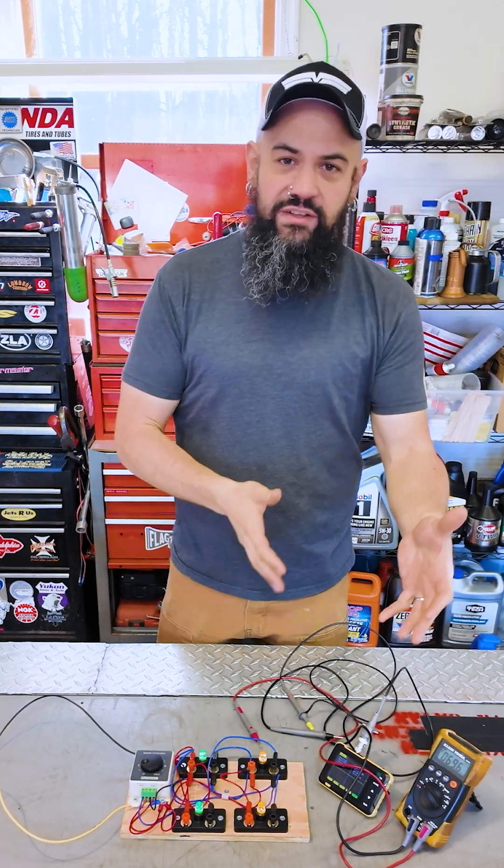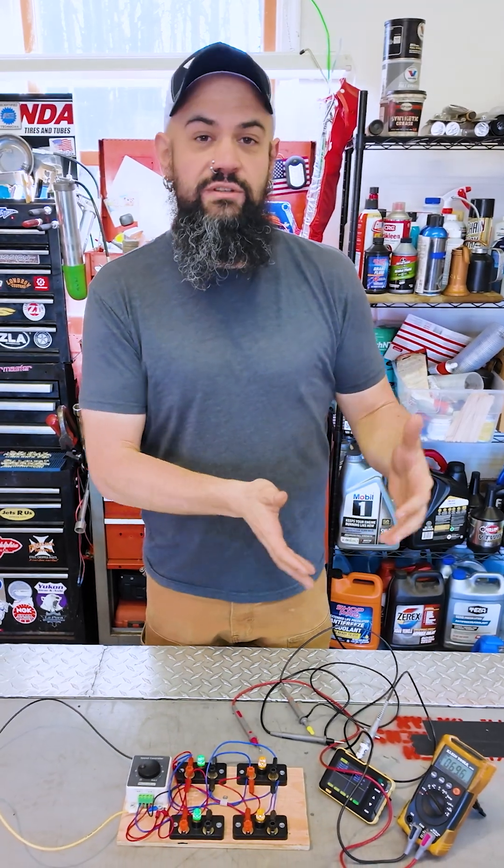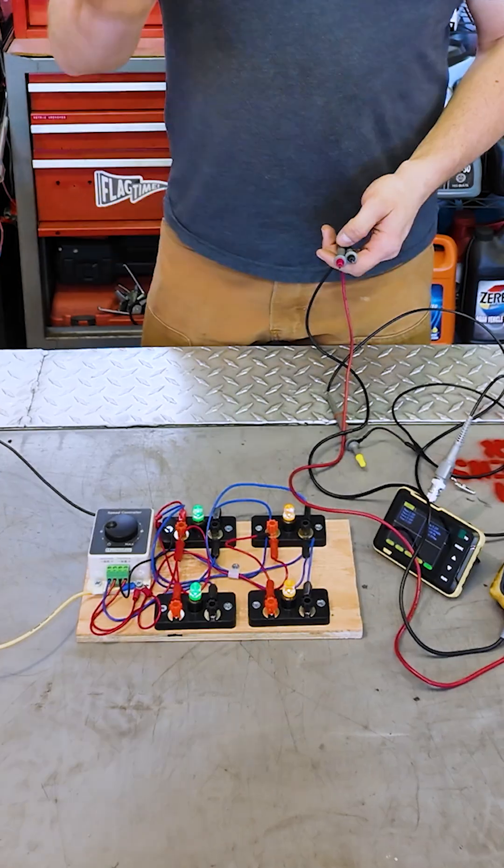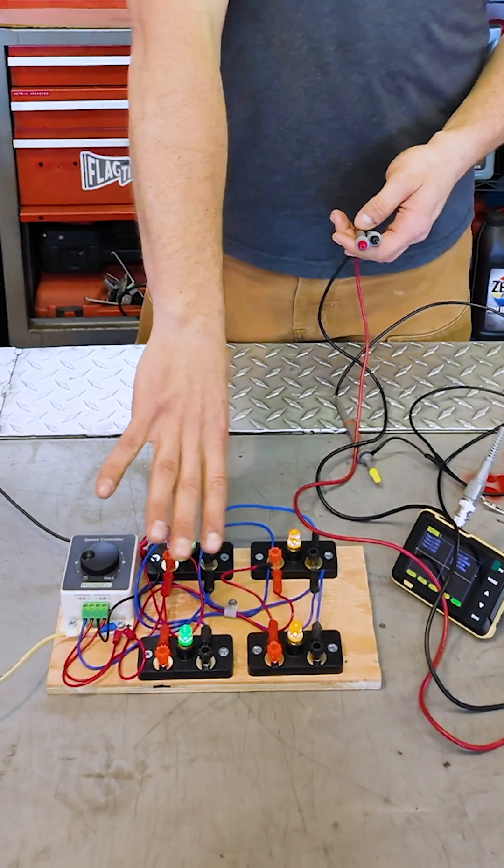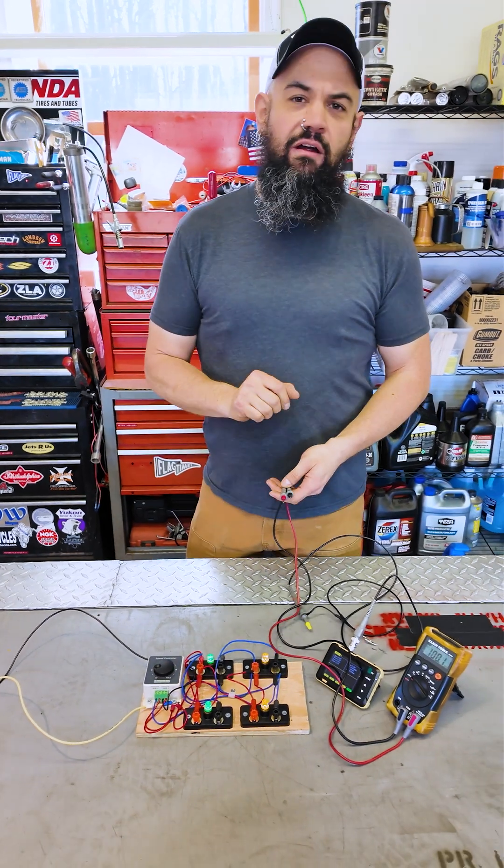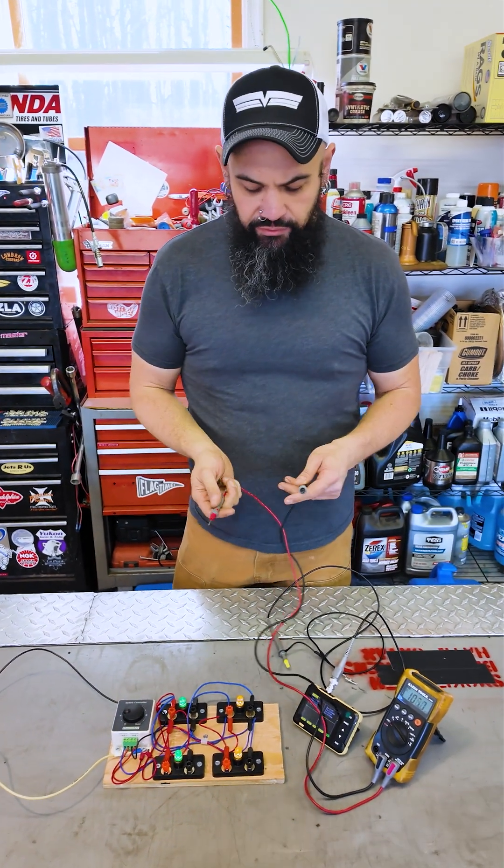So I've built a little diorama to kind of explain to you what things your DVOM can't show you if you're not a scope user. We imagine this green car is our modern car, the yellow lit car is an older car. Here's what we would hook up.